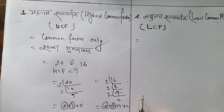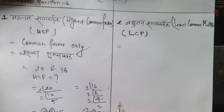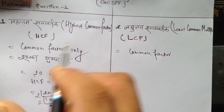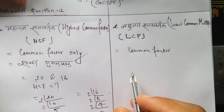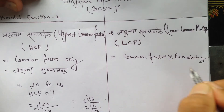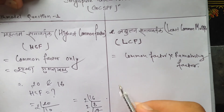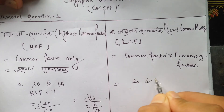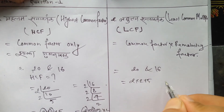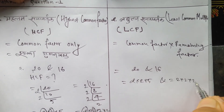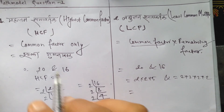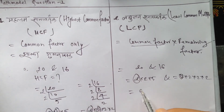Now we move to LCM — Least Common Multiple. For LCM, we take all the remaining factors. From 20 we have remaining factor 5, and from 16 we have remaining factors 2 × 2. Combined with the common factors, we calculate the LCM using the common and remaining factors of 20 and 16.